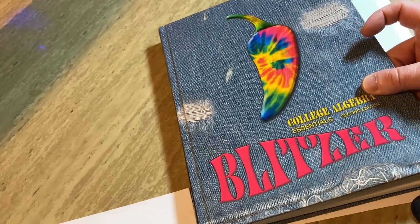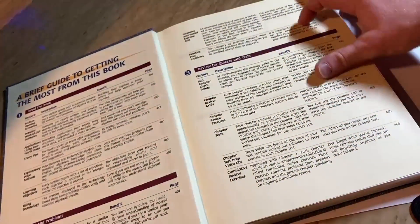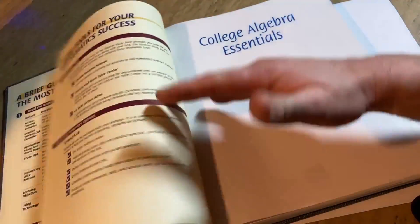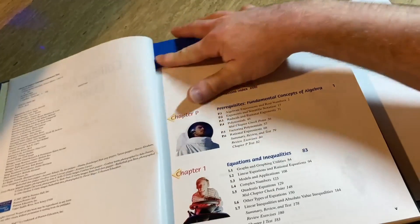These are college level textbooks used in the United States currently. This is an older edition. Here it talks a little bit about what's in the book.